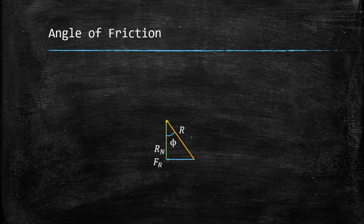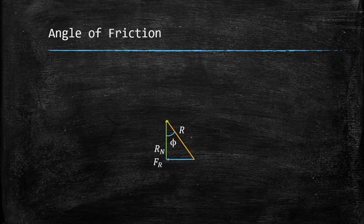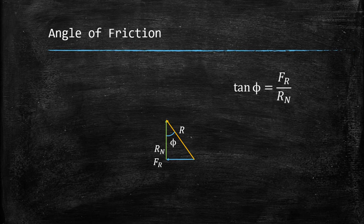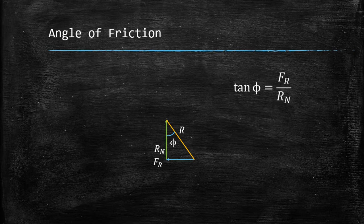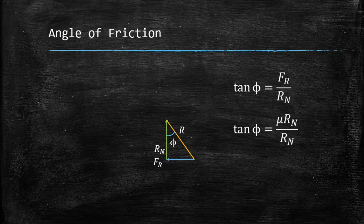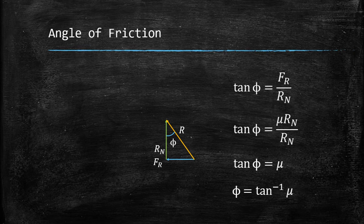The angle of friction phi is the angle made by the normal reaction and the resultant. Applying trigonometry, tan phi equals FR divided by Rn. Since FR equals mu times Rn, we get tan phi equals mu. Therefore, phi equals tan inverse of mu. So, angle of friction phi equals tan⁻¹(μ).